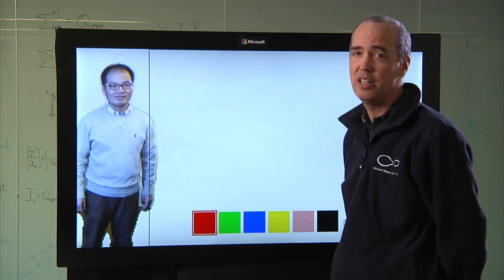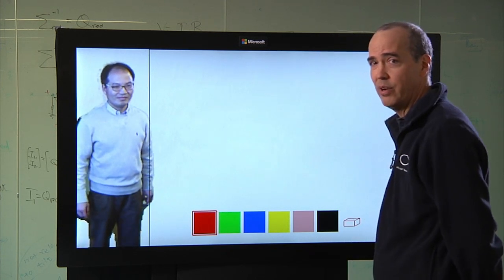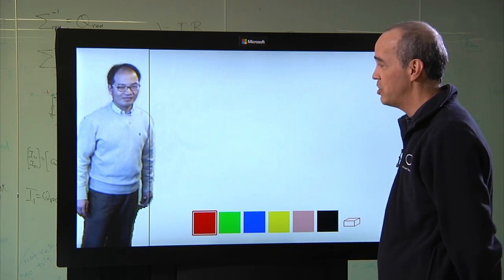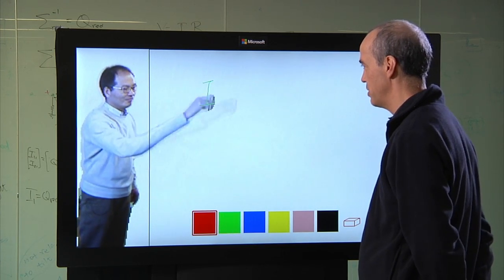More importantly, Kinect can be used to provide a level of immersion that has not been possible before. Here we see what we call a 2.5D visualization, in which Zheng Yu can actually reach out of his video window to write on the shared writing surface.